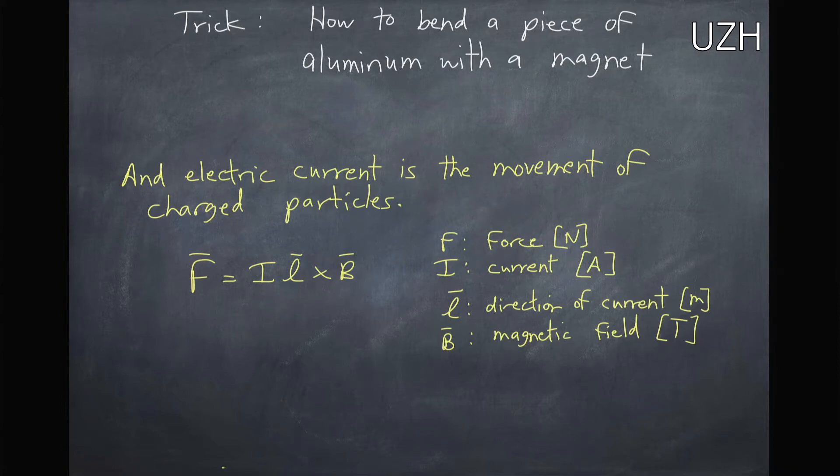Now an electrical current is the movement of charged particles. So we have a similar force, which is force equals the current times this distance vector, so the direction of the current, in the cross product with the magnetic field. So this is a similar formula to F equals qv cross B.